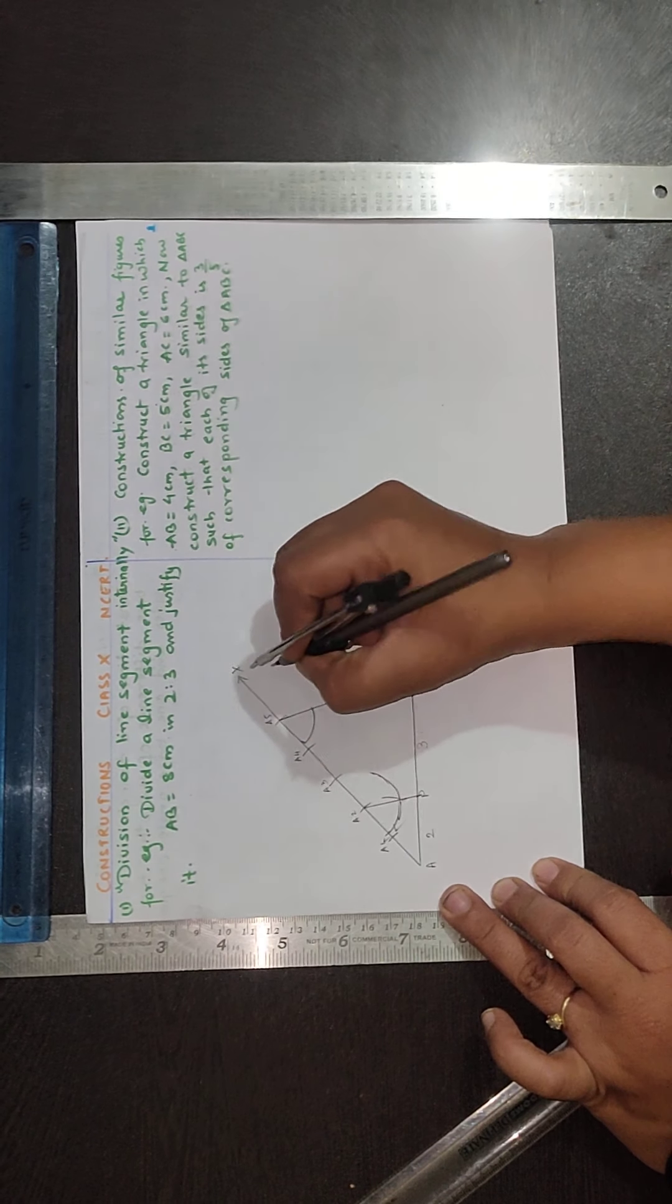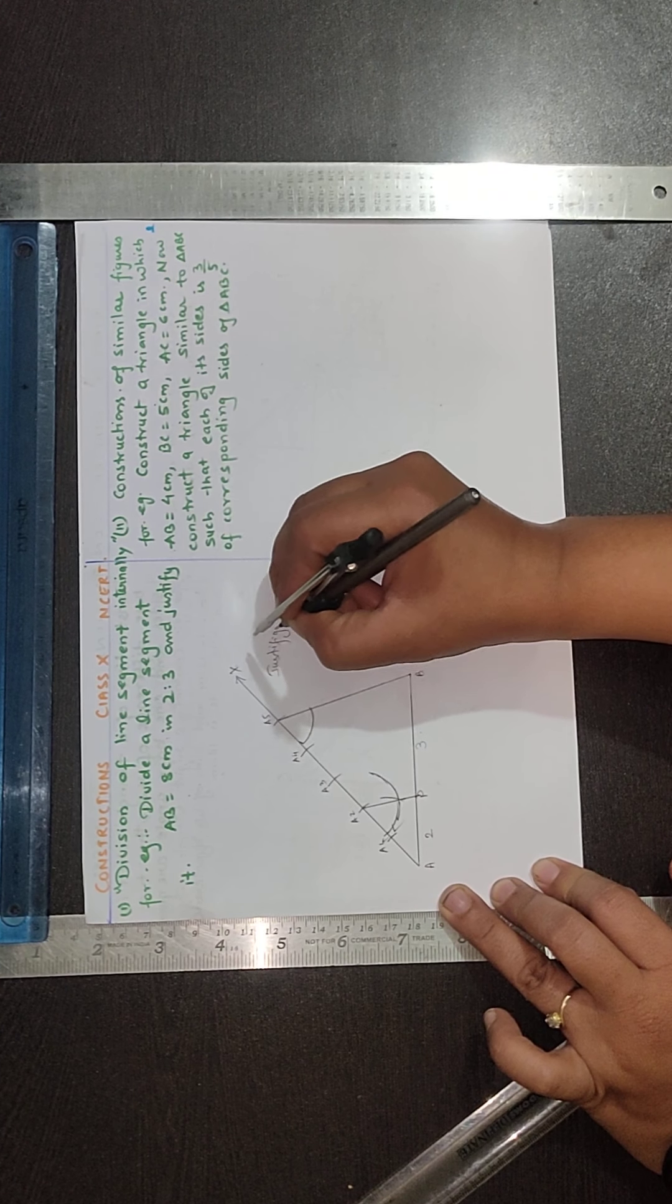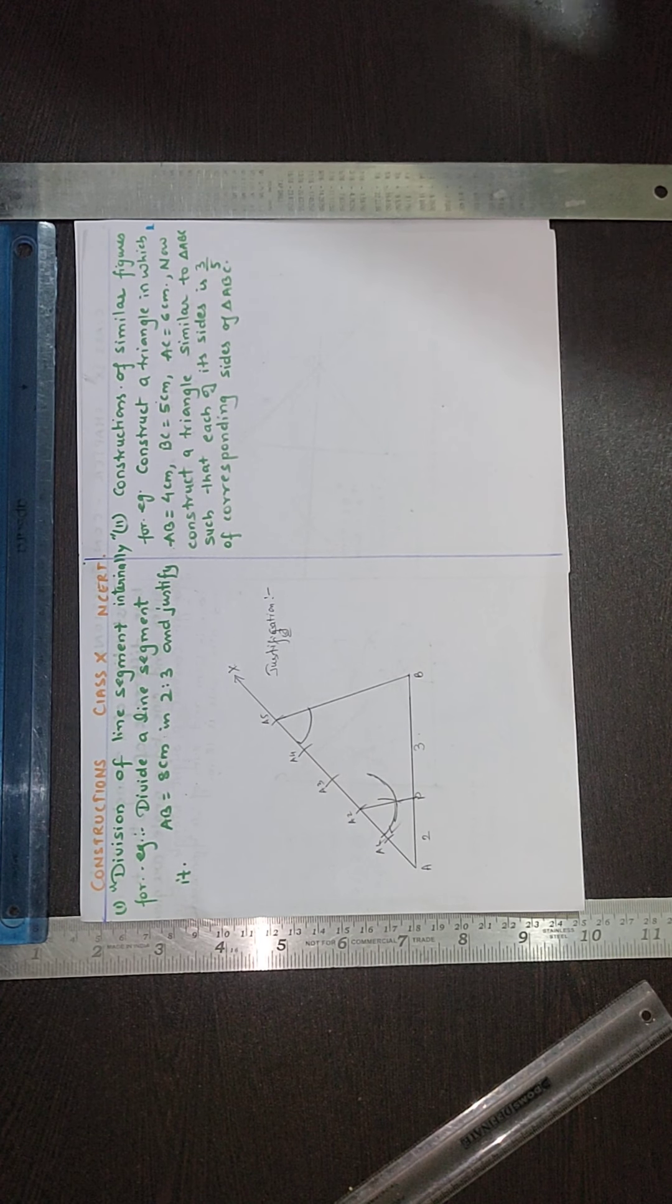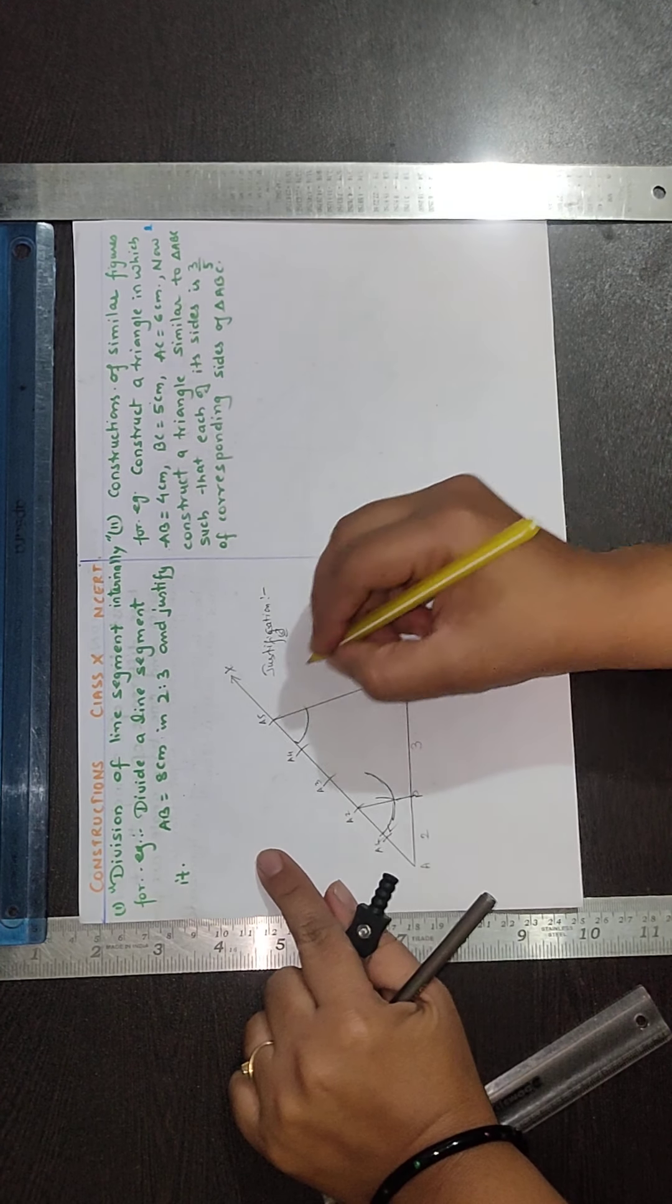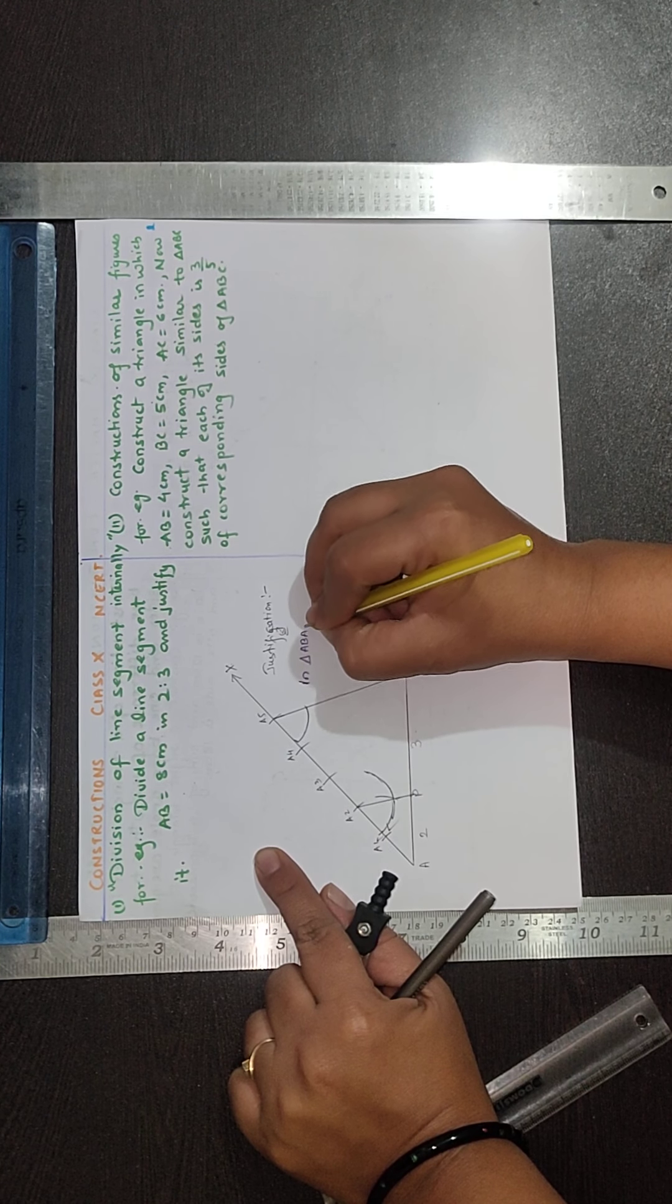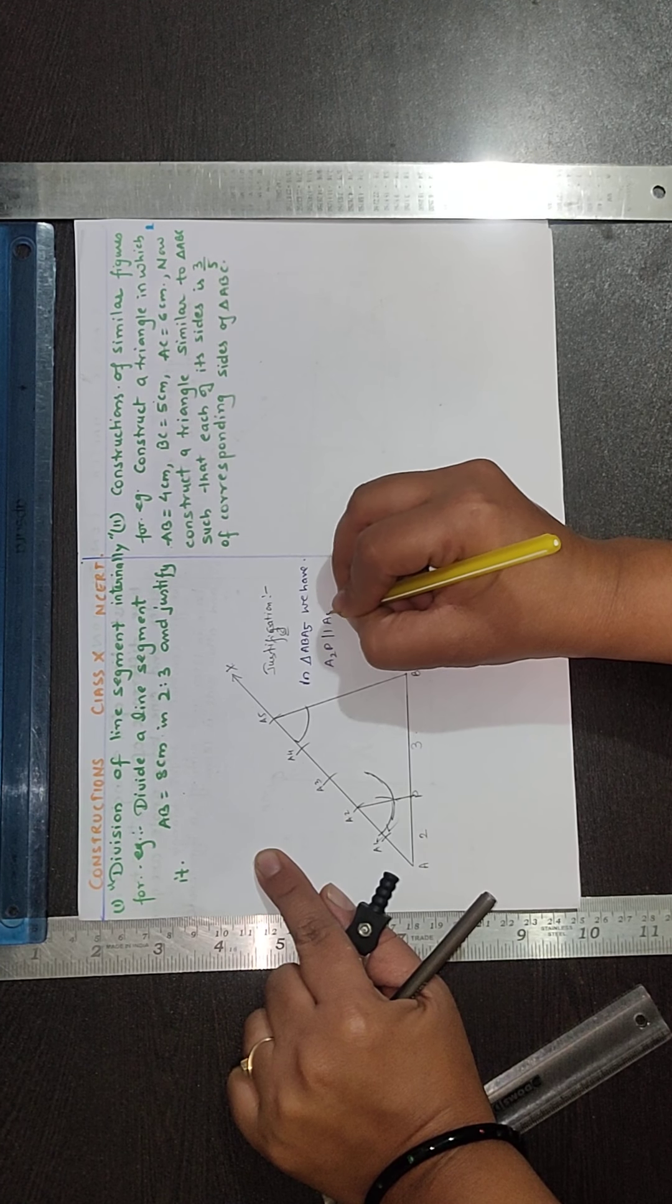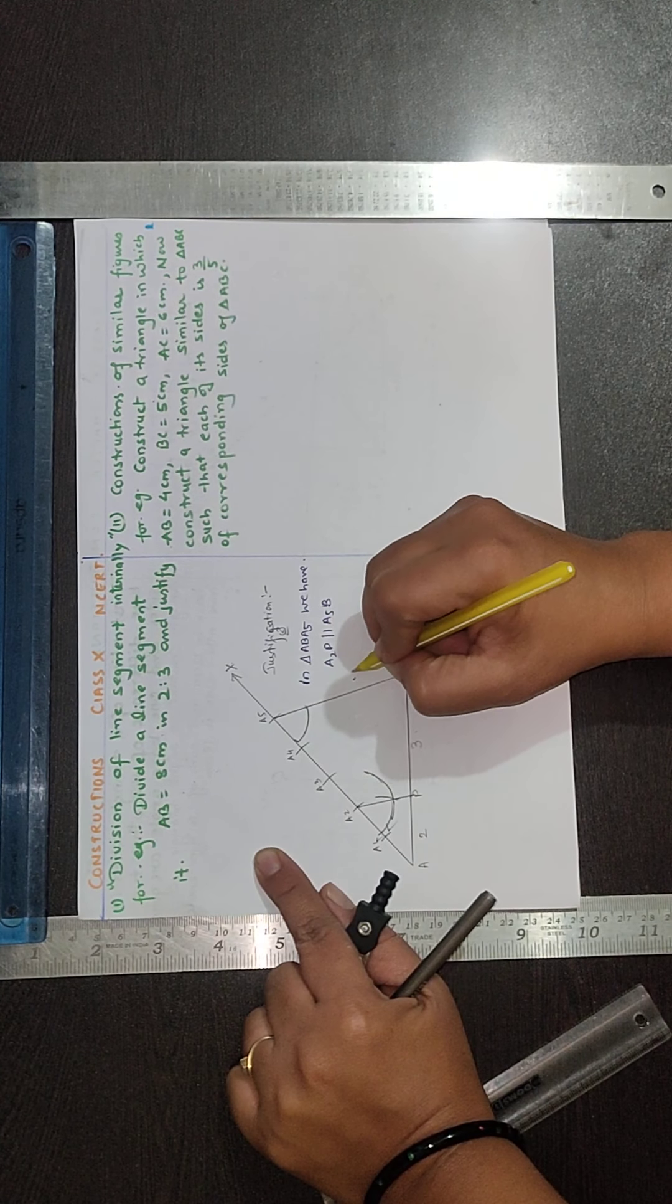Now we will be doing justification here. For justification we have to do some calculations. So let's start. In triangle, A2B parallel to A5B. When parallel lines are there then by Thales theorem